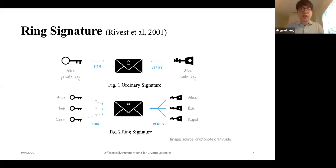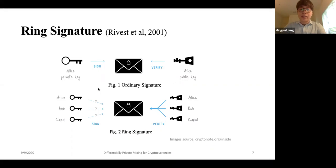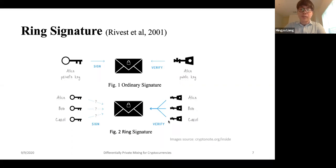Let me give a quick overview of ring signatures. In an ordinary signature, Alice uses her private key to sign a message (or transaction). In a ring signature, Alice can also use Bob's and Carol's public keys to co-sign a transaction. People can verify this transaction using Alice's, Bob's, and Carol's public keys, but they cannot know which one of Alice, Bob, or Carol actually used the secret key to sign it.